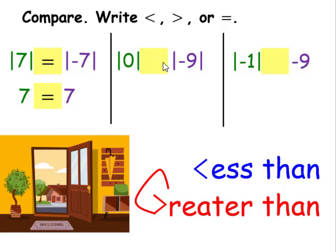The absolute value of 0 is 0, and the absolute value of negative 9 is 9. We can see that 0 is less than 9, so the absolute value of 0 is less than the absolute value of negative 9. The absolute value of negative 1 is 1, and negative 9 is just negative 9. We can see that 1 is greater than negative 9, so the absolute value of negative 1 is greater than negative 9.